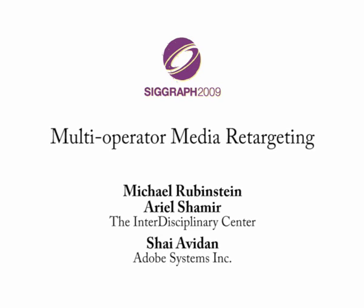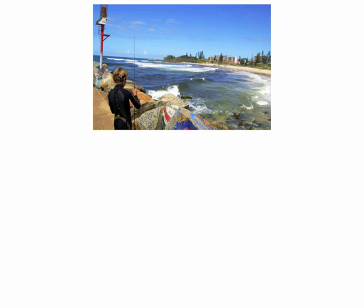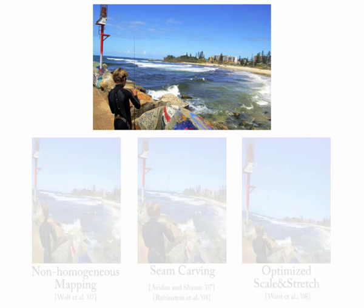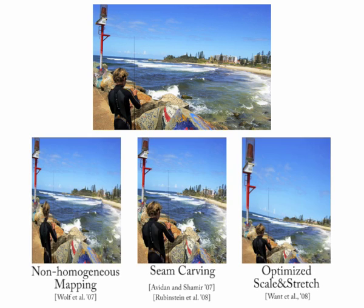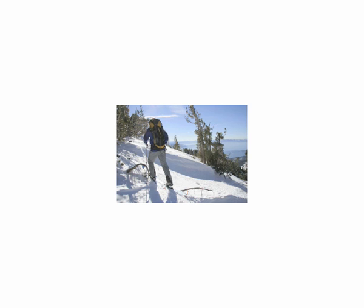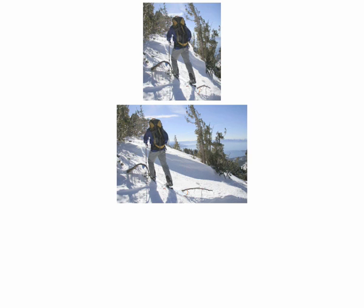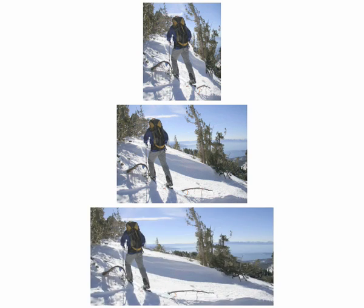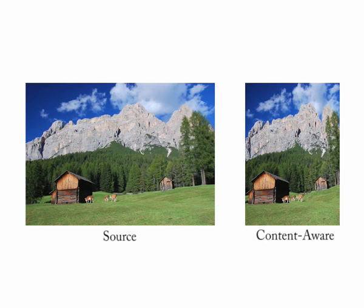Multi-operator retargeting. Recently, several content-aware retargeting methods have been proposed. These methods produce good results when the media contains regions of low interest that can be identified by automatic importance measures.